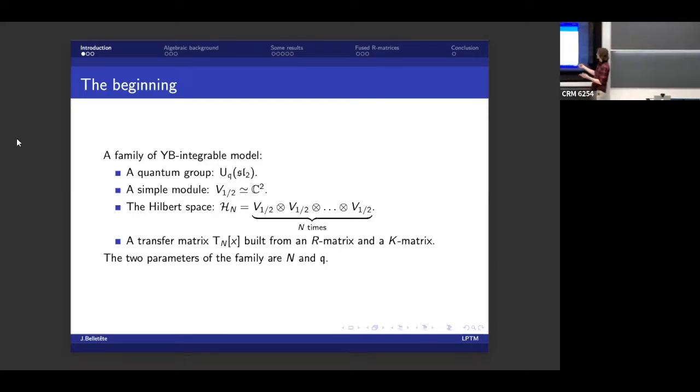And then finally, you define a transfer matrix, T_n(X), that is built out of the R matrix and a K matrix, if you have a boundary. So in principle, you can do this with a boundary model, or you can make it a periodic model. The periodic case is significantly more complicated, so today I'll be focusing on the case with boundary.